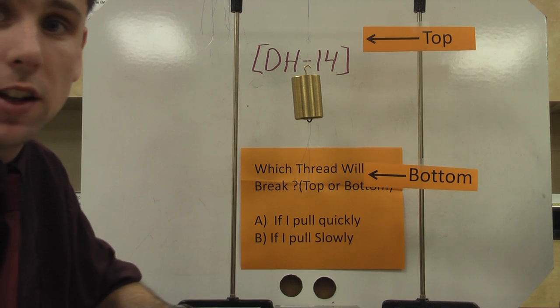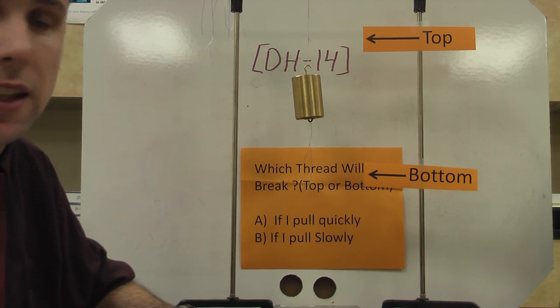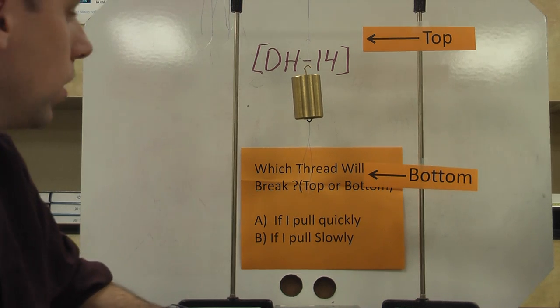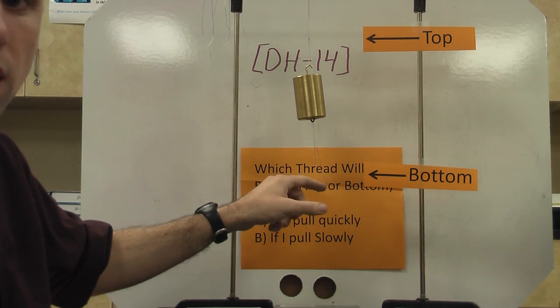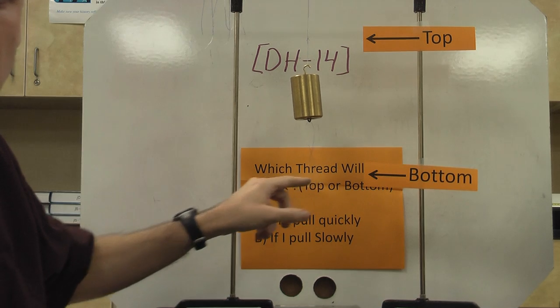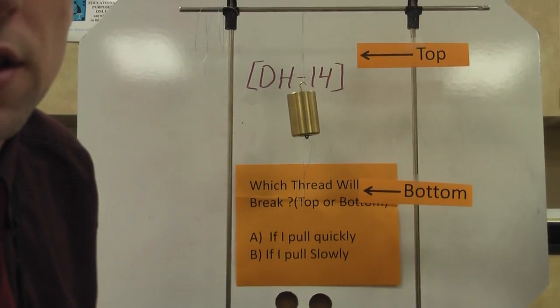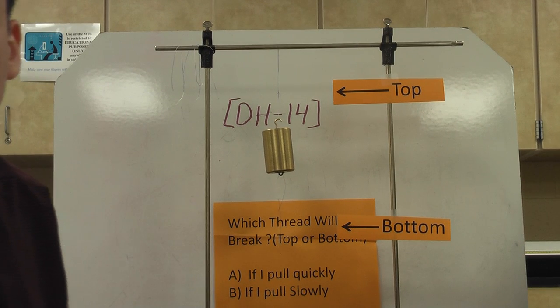This mass here is about a kilogram, about a thousand grams, and it is connected to a bar at the top here. And what we're going to do is we're going to tug on this bottom string. And the question is which of these do you think will break first? The top one or the bottom one?